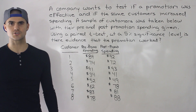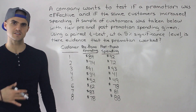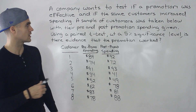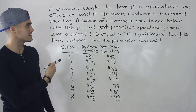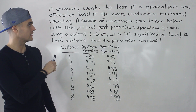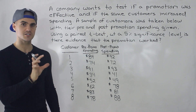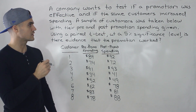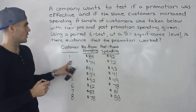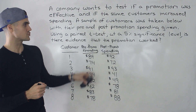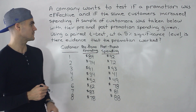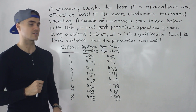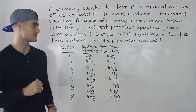Welcome back. Patrick here, and in this video we're going to do another example with two-sample hypothesis testing. A company wants to test if a promotion was effective and if the same customers increased spending. A sample of customers was taken with their pre and post promotion spending given. Using a paired t-test at a 5% significance level, is there evidence that the promotion worked?